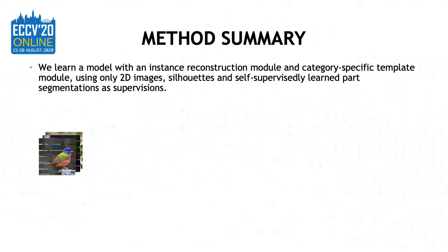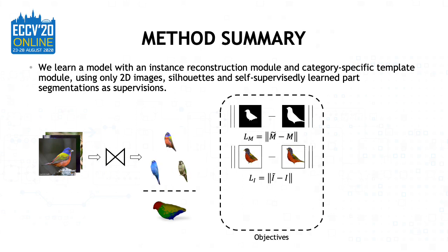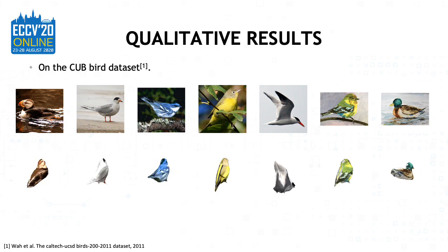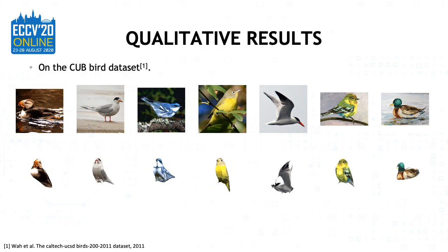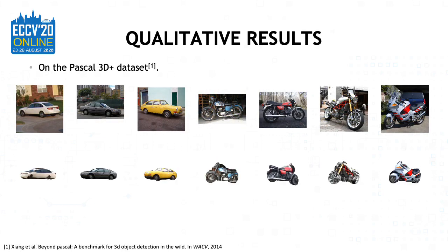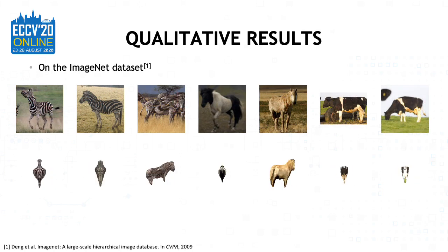To summarize, we propose a reconstruction model that predicts both instance-specific meshes and the category-specific semantic template using silhouettes, images, and self-supervised learned semantic parts as supervisions. We first show some qualitative results on bird images, and the last two images show that our model also generalizes to paintings. We also train our model on rigid objects like cars and model bags, and non-rigid objects like zebra, horses, and cows.